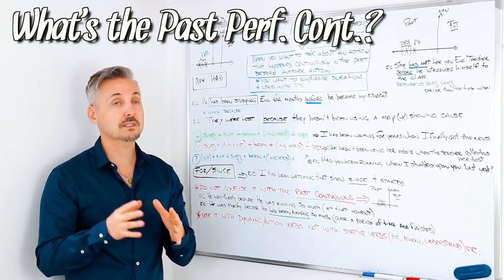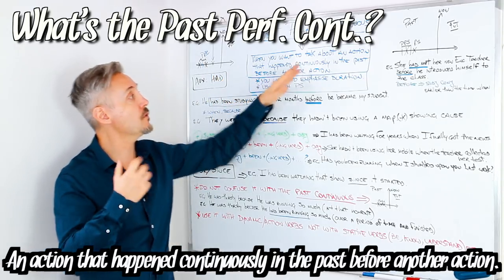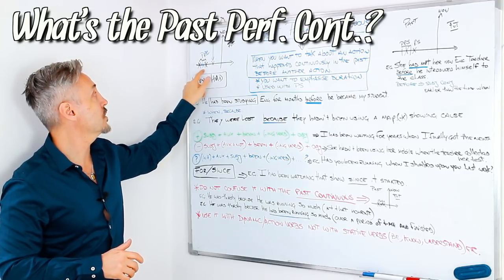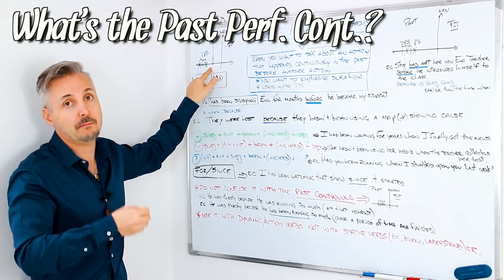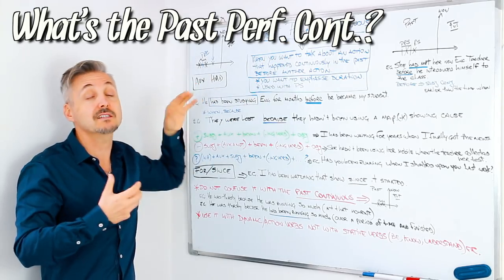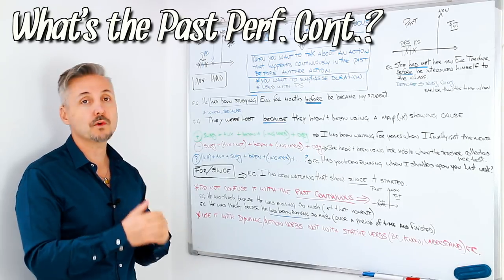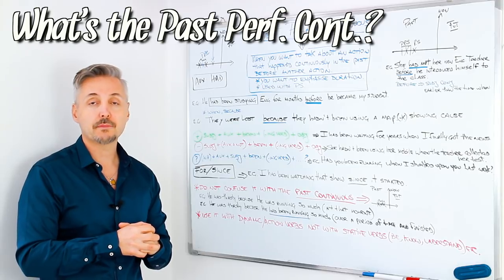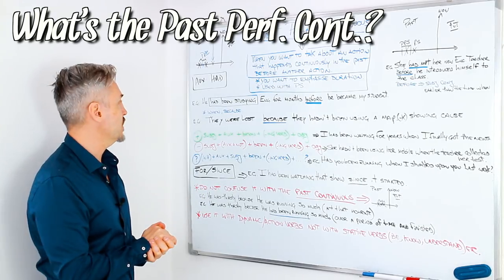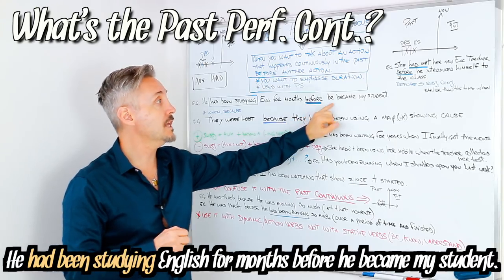For the Past Perfect Continuous, instead, you use it when you want to talk about an action that happened continuously in the past before another action. I drew the timeline here so you can see the Past Perfect Continuous — continuously — and then the Past Simple, a point in the past. We use the Past Perfect Continuous to emphasize duration, and it's used with another past tense, generally the Past Simple. The auxiliary is 'had', and we use the Past Participle of 'be', which is 'being', and then the ING verb. So let's look at my introductory example: 'He had been studying English for months before he became my student.'